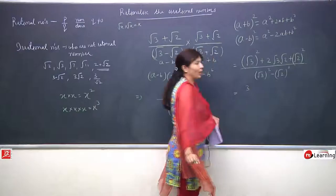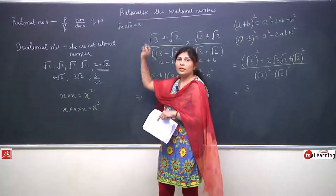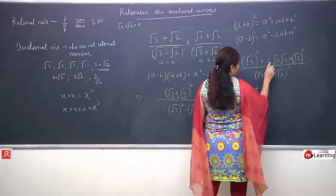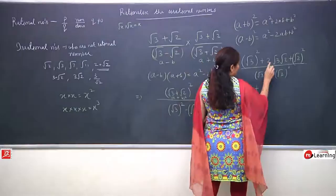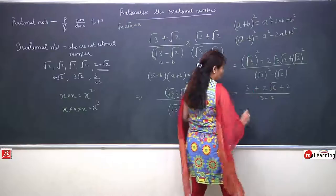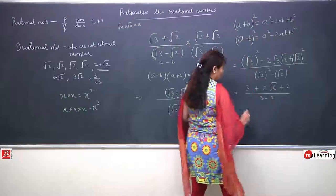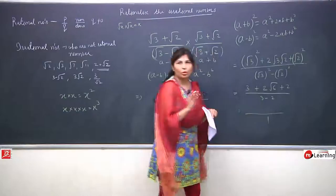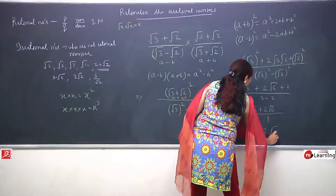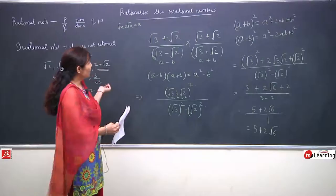So we apply (a + b)² = a² + 2ab + b², upon the denominator a² - b², which has already been rationalized. Now root 3 squared is 3, plus 2 times root 3 times root 2 which gives root 6, so 2 root 6, plus root 2 squared is 2. The denominator is 3 minus 2 = 1. When denominator is 1, it has no effect. So 3 plus 2 is 5, and the final answer is 5 + 2 root 6.